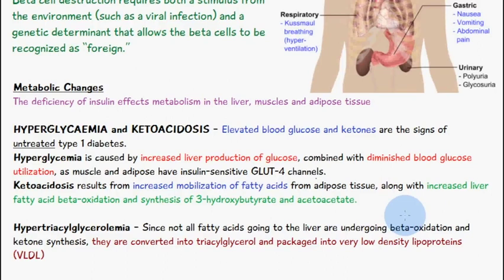That's why we call it hyperglycemia. We also have ketoacidosis because we have increased mobilization of fatty acids from the adipose tissue — the cells are starving, they're not getting their glucose. So we have increased mobilization of fatty acids from adipose tissue and increased liver fatty acid beta-oxidation and synthesis of 3-hydroxybutyrate and acetoacetate. These two are both ketones, so we have ketogenesis here.